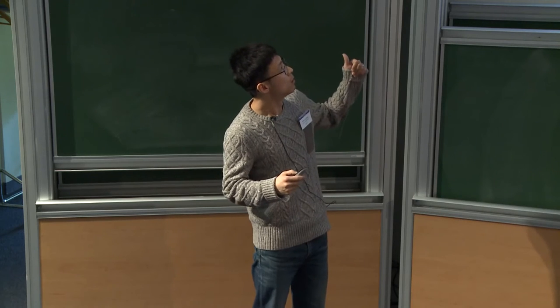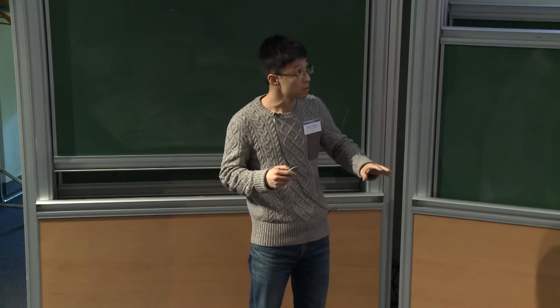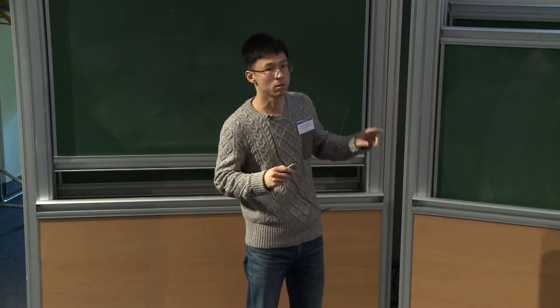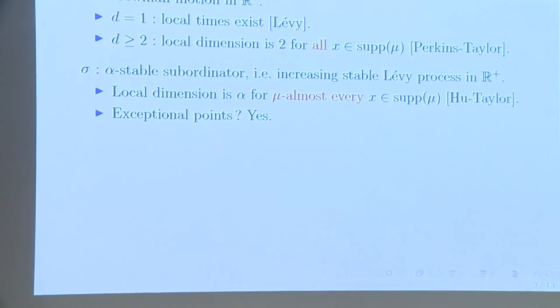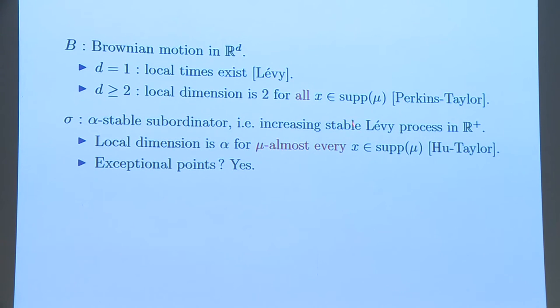It says two things. First, the limit does exist. The second thing is that for all the points, the regularity exponent, this H, is the same for all X. For another kind of Levy process, for example, the increasing stable Levy process, also called subordinators, alpha-stable subordinators, we can also consider this question. Its occupation measure has local dimension alpha. In this case, not for all the X in the support, but for mu almost every point in this support. This is a result by Hu and Taylor in the late 90s. Does there exist exceptional sets, exceptional points? The quick answer is yes. I'll talk about this later.